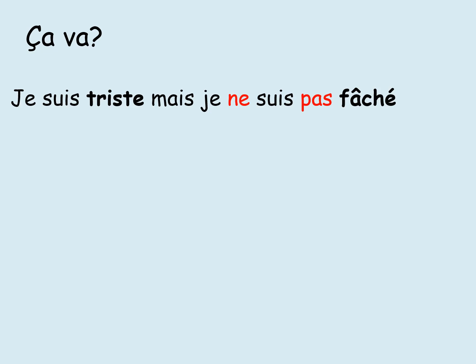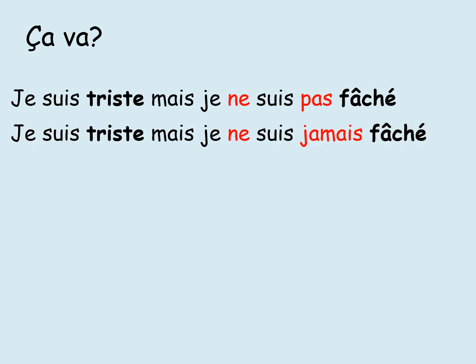Let's have a look again at the question, but we're going to extend it even more. There's your example of the sentence with ne pas: je suis triste, mais je ne suis pas fâché — I am sad, but I am not angry. Now we've changed it — this time we've got je suis triste, mais je ne suis jamais fâché. Can you remember what ne and jamais mean? The ne and pas is not, so ne and jamais means never. The sentence now goes: I am sad, but I am never angry.